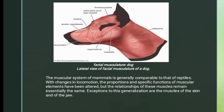With changes in locomotion, the proportions and specific functions of muscular elements have been altered, but the relationships of these muscles remain essentially the same. Exceptions to this generalization are the muscles of the skin and of the jaw.